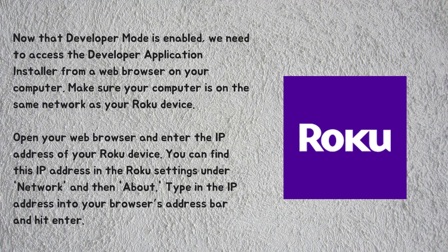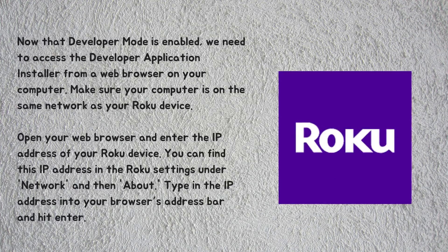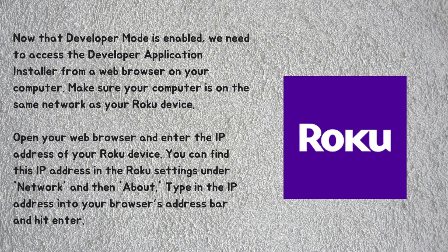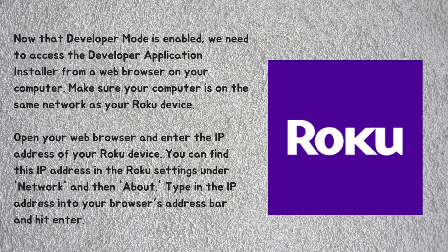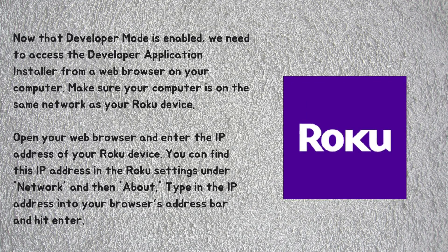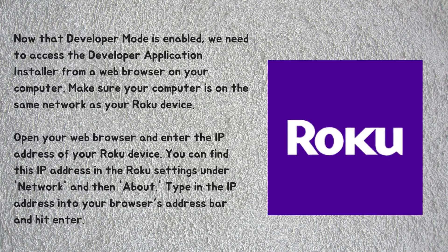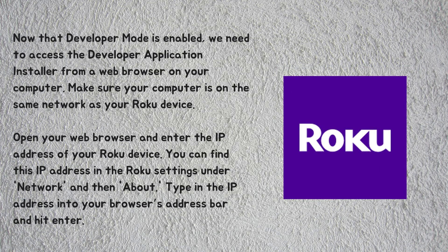Now that developer mode is enabled, we need to access the developer application installer from a web browser on your computer. Make sure your computer is on the same network as your Roku device. Open your web browser and enter the IP address of your Roku device. You can find this IP address in the Roku settings under Network and then About. Type in the IP address into your browser's address bar and hit Enter.